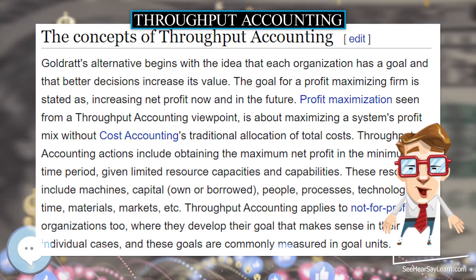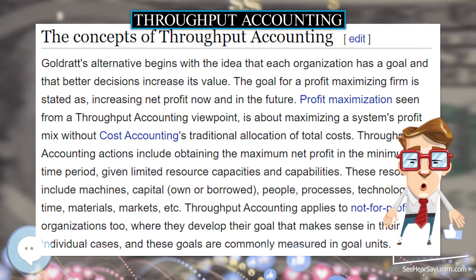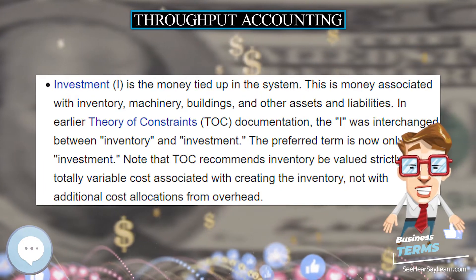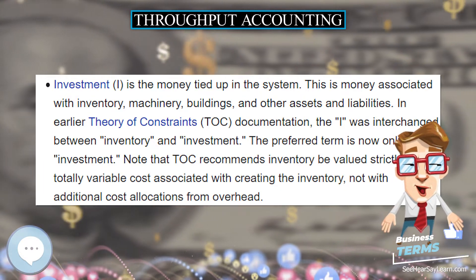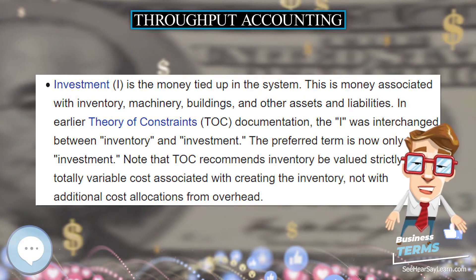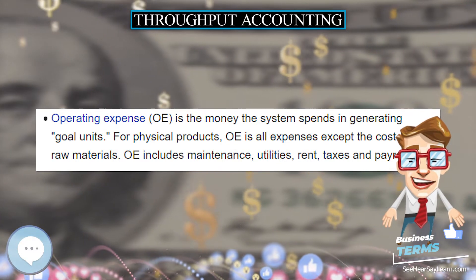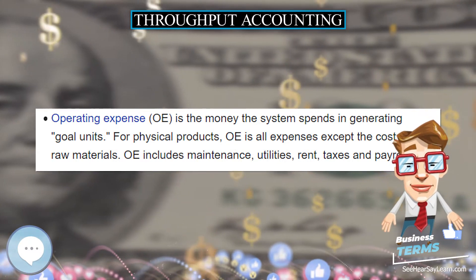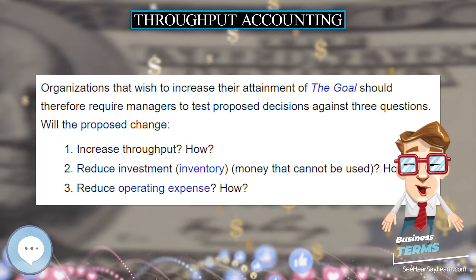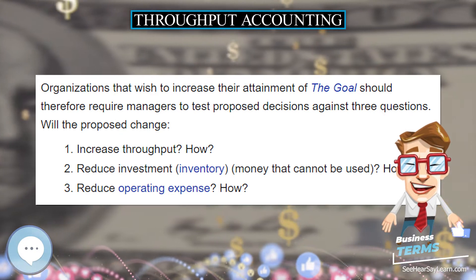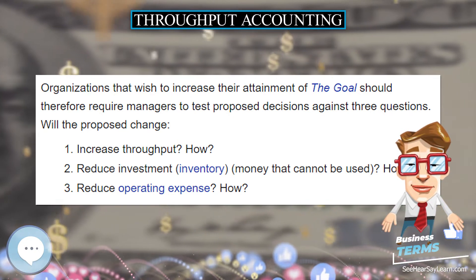Throughput accounting improves profit performance with better management decisions by using measurements that more closely reflect the effect of decisions on three critical monetary variables: throughput, investment (aka inventory), and operating expense, defined below.